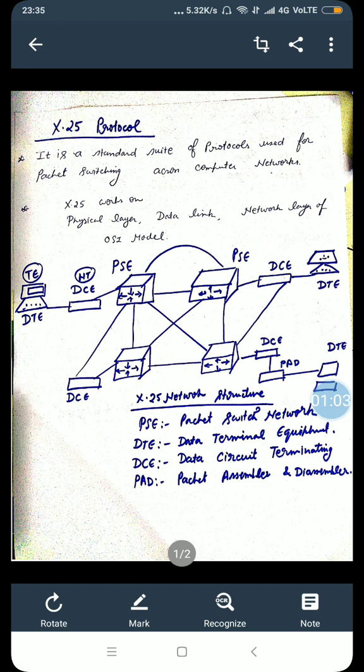Here we can see the basic structure, the architecture of X.25 network protocol. PSE here shows the packet switch exchanges. DT shows the data terminal equipments. DCE shows the data circuit terminating equipments. And PAD is the packet assembler and disassembler. So you can see the interconnection and the cloud of the X.25 network.